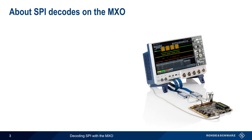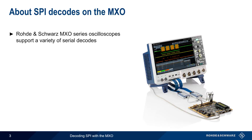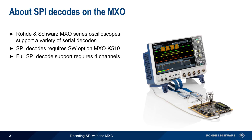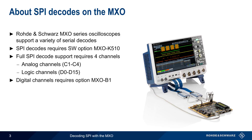Rohde & Schwarz's MXO Series Oscilloscopes support a wide variety of serial decodes, and SPI decodes are enabled by Software License K510. Since SPI is a four-wire protocol, full SPI decode support requires four channels. These can be either analog channels or logic/digital channels. Note that digital channels require the MXO B1 option as well.